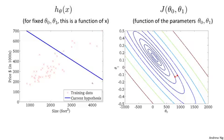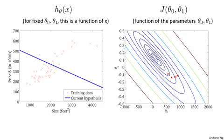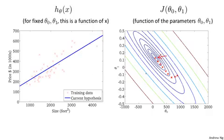As I take another step of gradient descent, my line on the left changes, and I've also moved to a new point on the cost function. As I take further steps, I'm going down in cost, and my parameters are following this trajectory. If you look on the left, the corresponding hypotheses seem to be getting better and better fits to the data, until eventually I've wound up at the global minimum — and this gives me a good fit to the data.